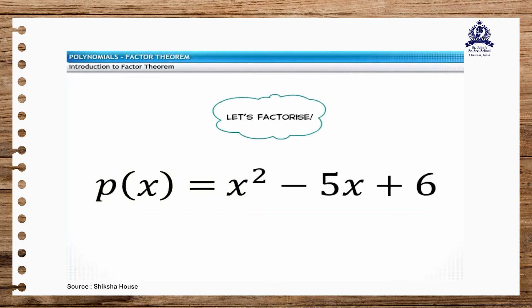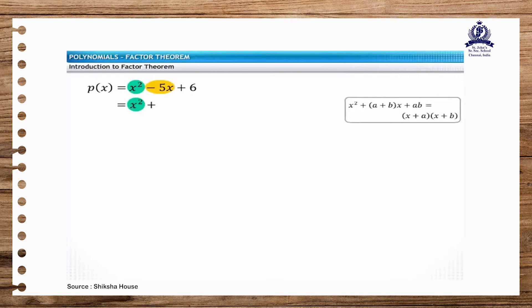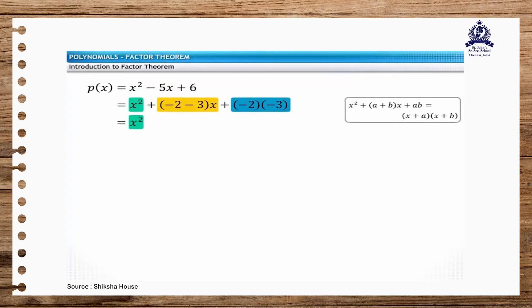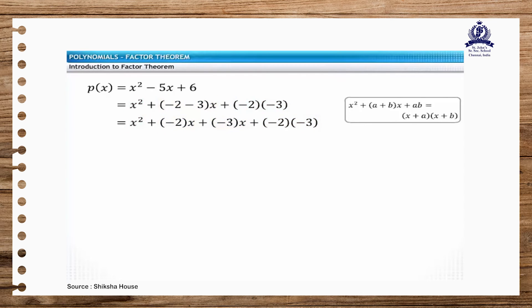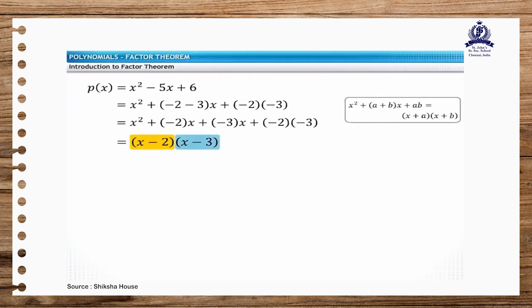Now, let's factorize this polynomial. We will write the polynomial in the form of an algebraic identity. This method of factorization of a polynomial is also known as splitting the middle term. The factors of this polynomial are x minus 2 and x minus 3.